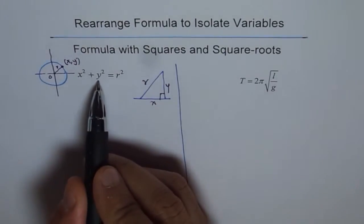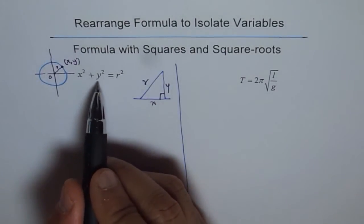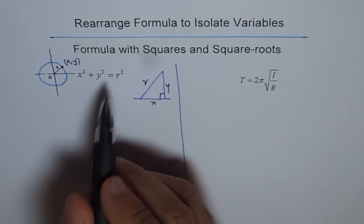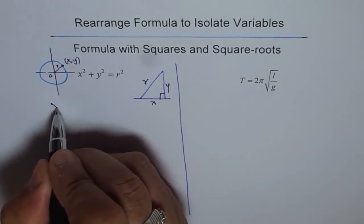First, let us isolate y from this formula. If you want to isolate y, what should you do? We can take away x² from both sides. So x² + y² - x² = r² - x².